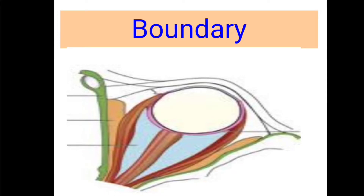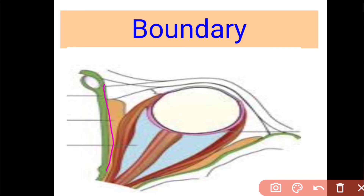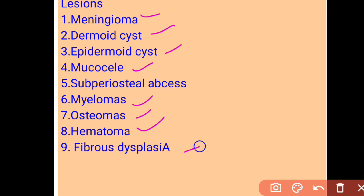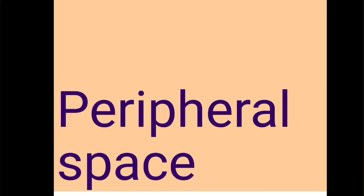The boundaries of the subperiosteal space: on the outer side we have the orbital bones, and on the inner side the periorbita. In between lies the subperiosteal space. Anteriorly, there is firm attachment of the periorbita to the orbital ring, so the space ends there anteriorly. Lesions which can occur in this space include dermoid cysts, epidermoid cysts, mucoceles, myelomas, osteomas, meningiomas, hematoma, and fibrous dysplasia. The approach to this space depends upon where the lesion is located.